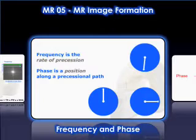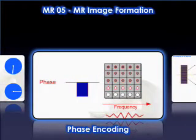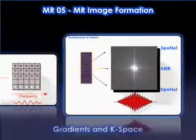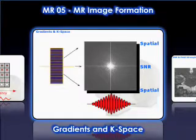The aim of Part 5 is to educate the participant on MR image formation. This course will review the concept of phase, frequency and amplitude, the principles for image formation in MRI, slice selection, phase encoding and frequency encoding, and the role of K-space in MR image formation.